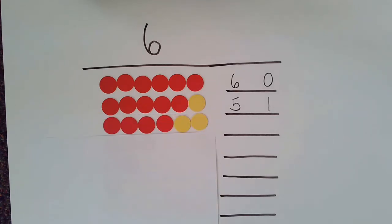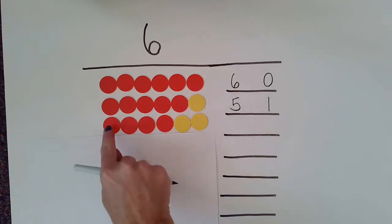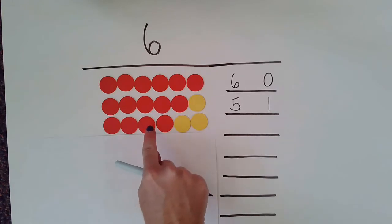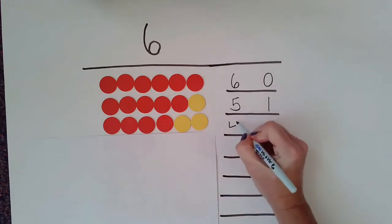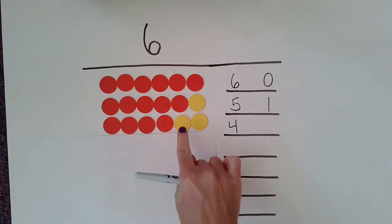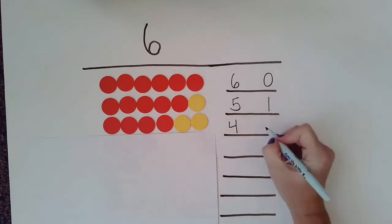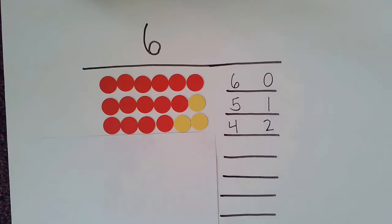Now I have one, two, three, four reds and one, two yellows. So I know that four and two are number partners for six.